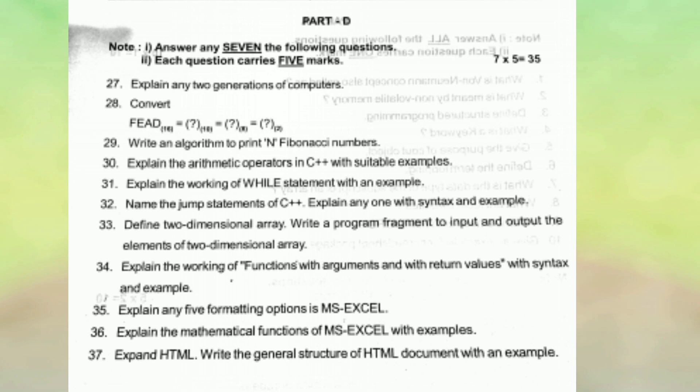Next is part D. In this part D, you have 11 questions, out of which you need to answer 7 questions. The first 2 questions will be from unit A, fundamental of computer. The next 2 will be from problem solving methodology, that is 29th and 30th. 5 questions will be from programming in C++. 2 questions will be from unit D, that is word processing, spreadsheet and web design.